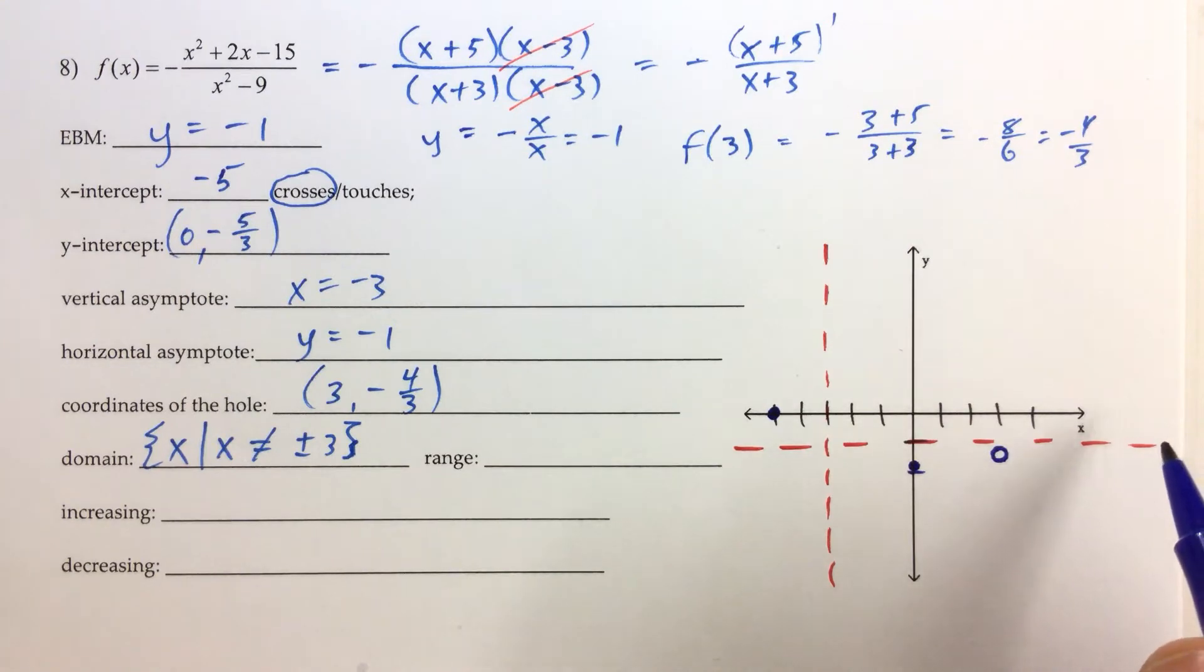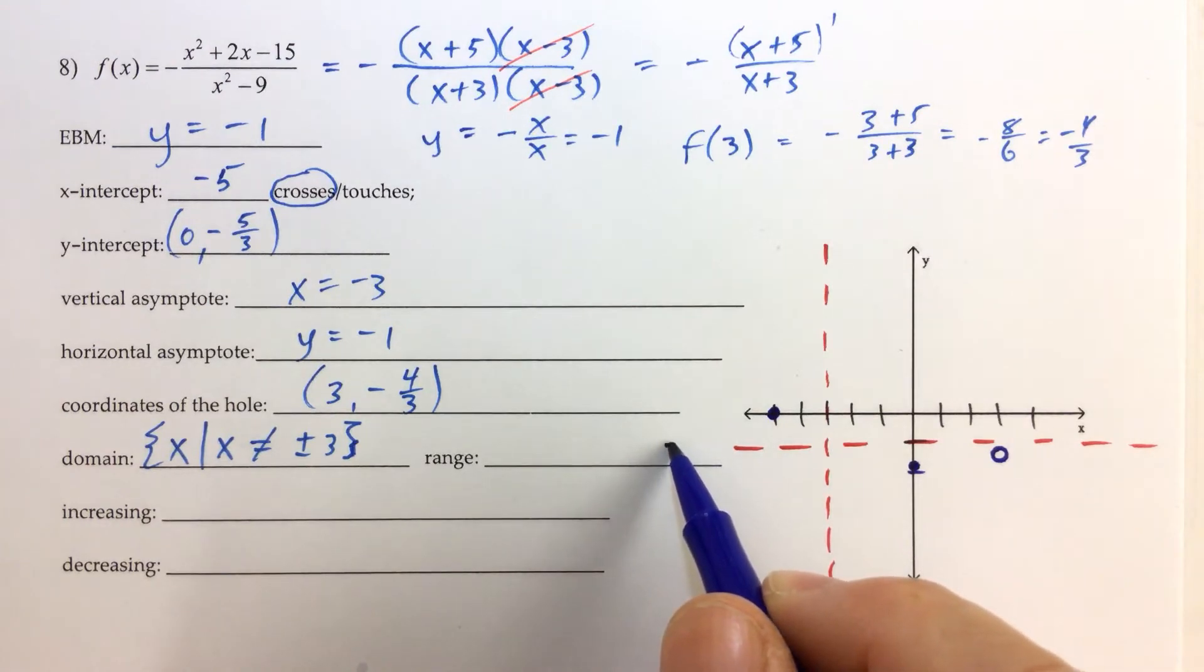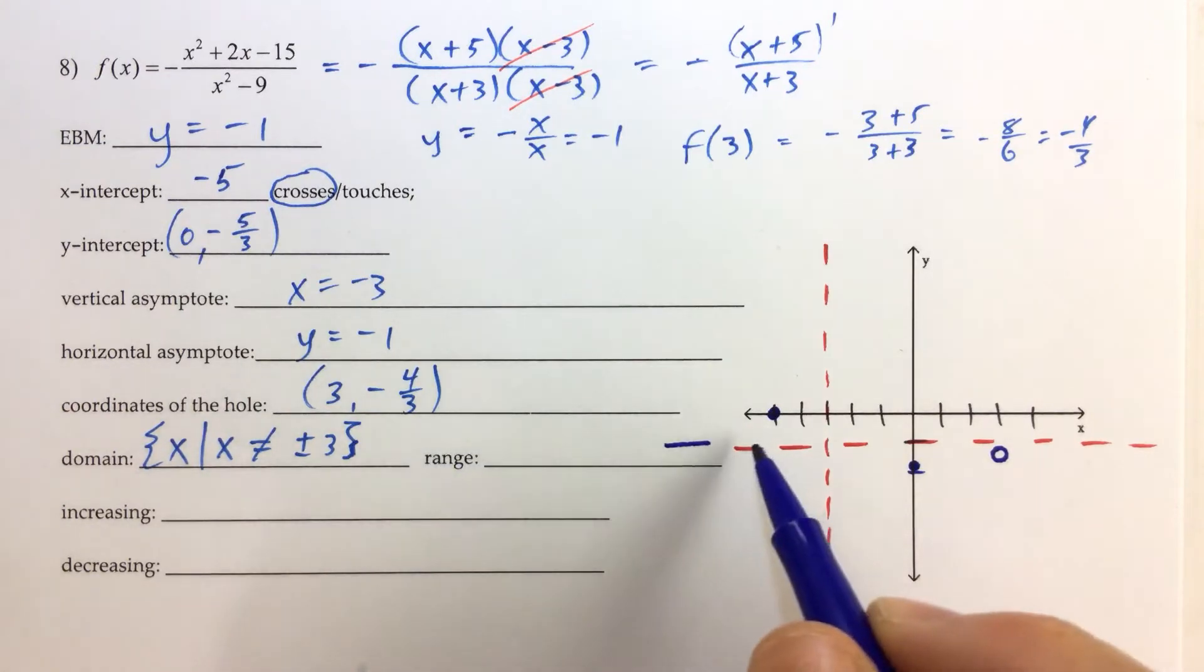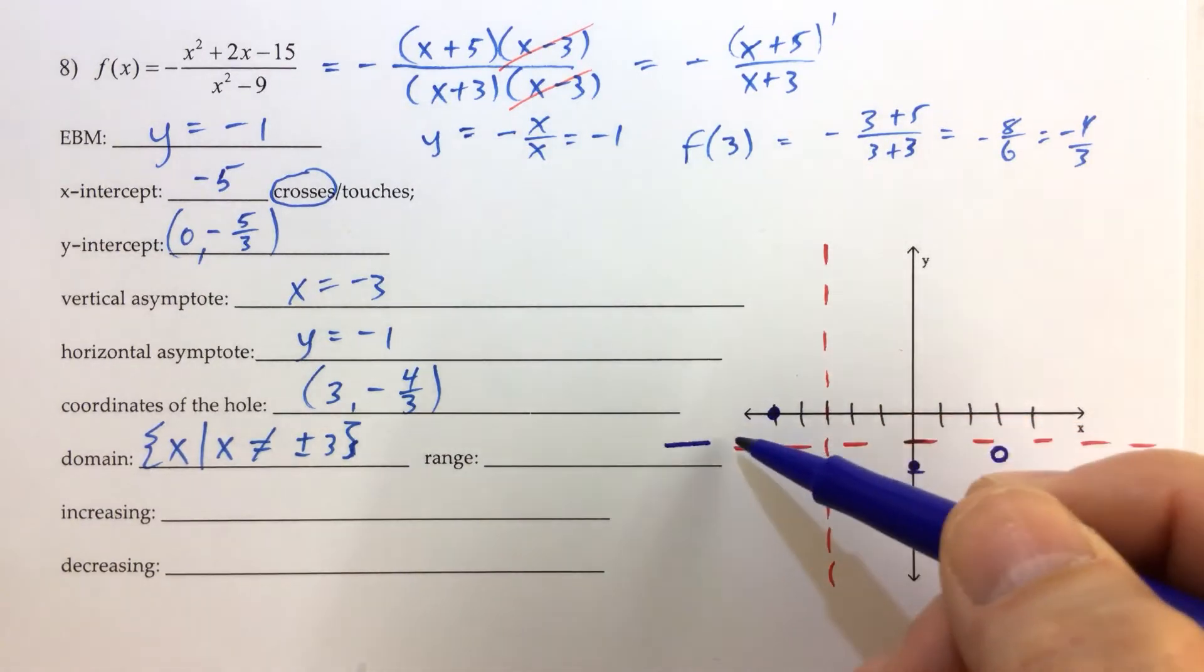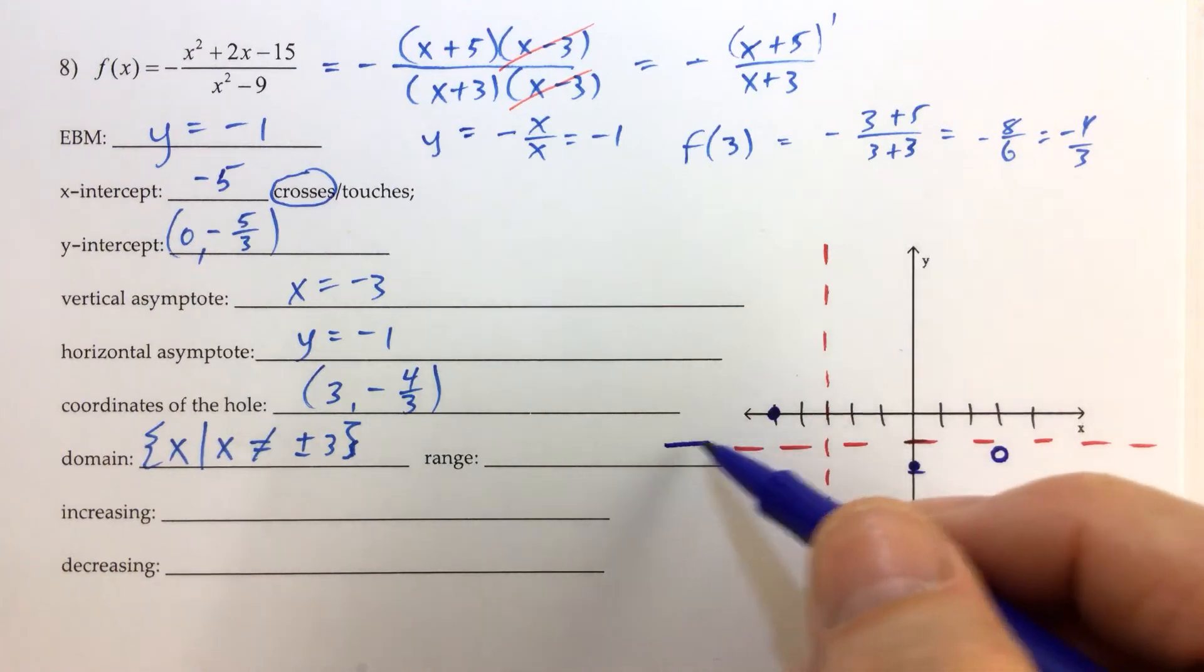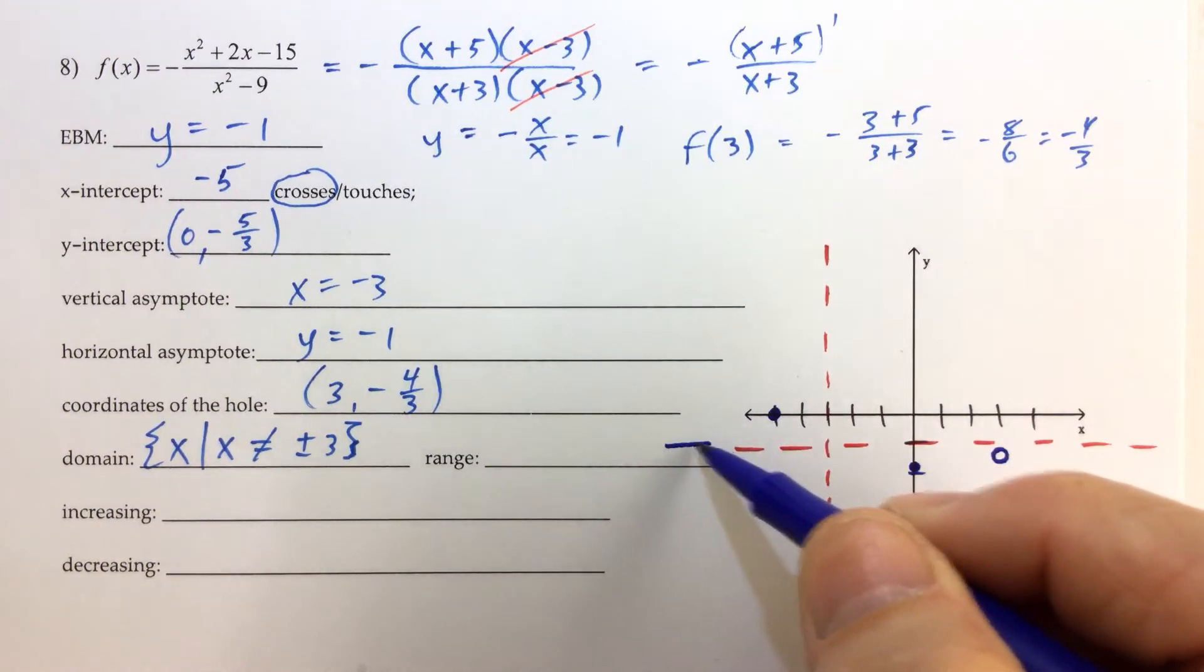So the entire purpose of its existence is to tell us that the graph is going to be really close to this y value of negative 1 when x gets really, really big in the negative direction. So if we were to start moving to the left on this graph, the y values of the function would get closer and closer to negative 1. That's why you always see the graphs kind of like a landing strip, going in and getting closer and closer like that. So it has to go close to that number.